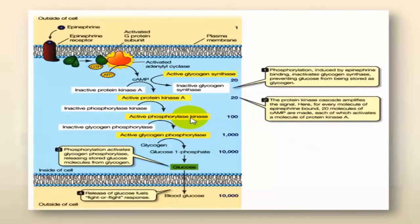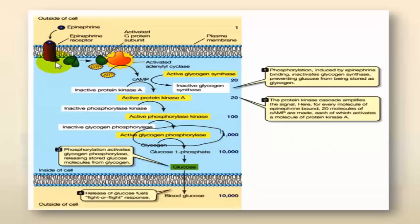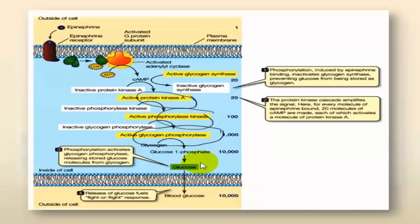The other type of cellular response involves changes in the activities of enzymes. We gave the example previously of the activation of glycogen phosphorylase under the effect of the activation of adrenergic receptors, where a series of enzymes are activated, resulting in the release of glucose into the bloodstream.